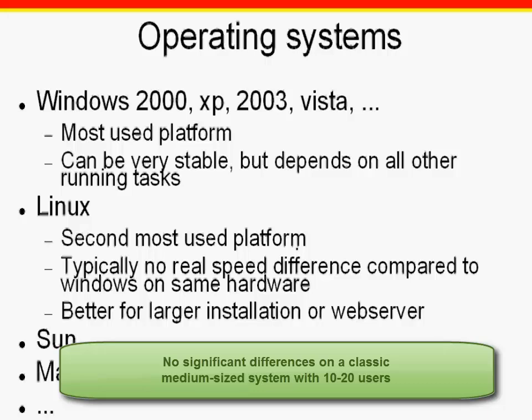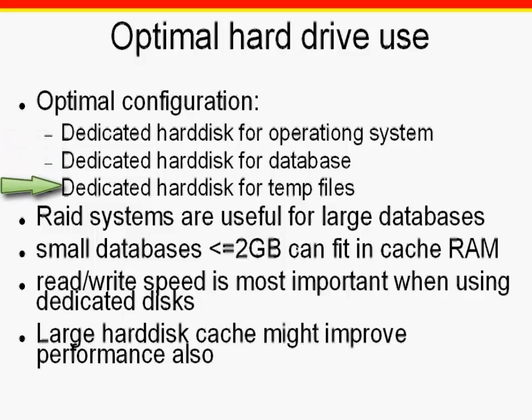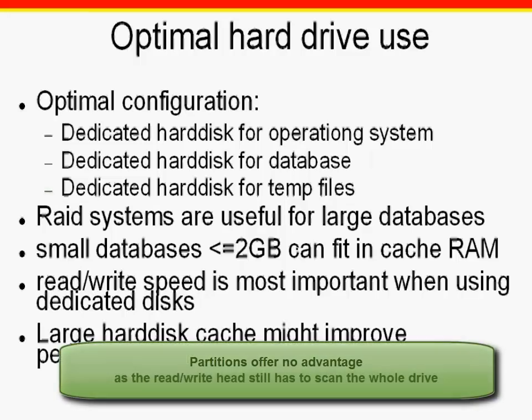If, however, you have a classic medium-sized system with 10 to 20 users, you will not detect any significant differences in overall performance. The optimal hard disk configuration for an efficient Firebird server is to have separate dedicated hard disks for the operating system, for the database, and for the temp files. Partitions are of no advantage here, as the read-write head still has to scan the whole thing.